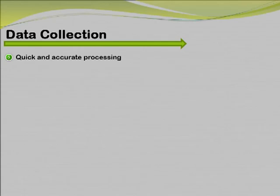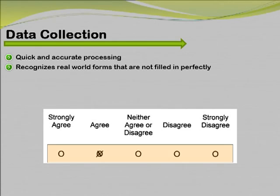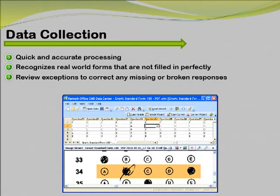Remark Office OMR provides quick and accurate data processing. It recognizes real-world forms that are not filled in perfectly. The ability to review exceptions once the data has been collected allows you to review and correct exceptions, such as missing or multiple responses, before exporting your data or running any analysis with Remark QuickStats. And now, with version 8, you have the ability to ignore large marks on your form. If your respondents cross out a selected answer, you can now ignore that mark. Unlike past versions, you can instruct respondents to cross out their mistakes rather than attempt to erase them or use whiteout.